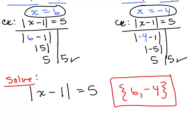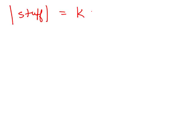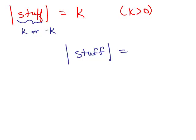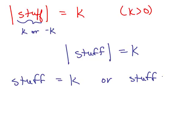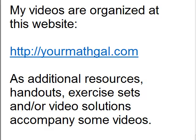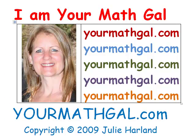In general, this is the way we do it algebraically. If you have some stuff inside the absolute value and some positive number k over here, the stuff inside could either equal k or it could equal negative k to make it true. We'll solve more problems like this in the next video, and we'll also discuss what happens if k is 0 or if k is negative.